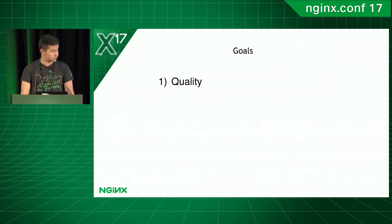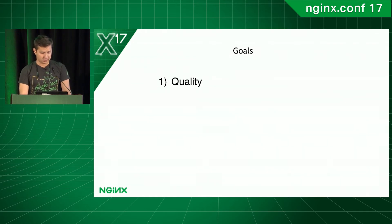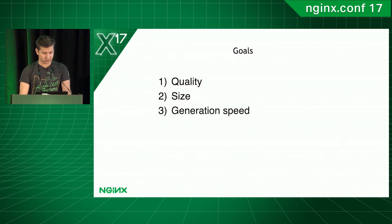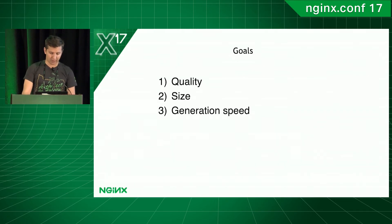The first concern is quality — nobody wants to look at pixelized pictures. Second is size: smaller is better. Third is image generation speed. Unfortunately, the first two points depend on each other, and when we work on optimizing one, we degrade the other.